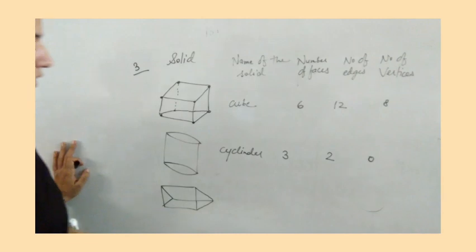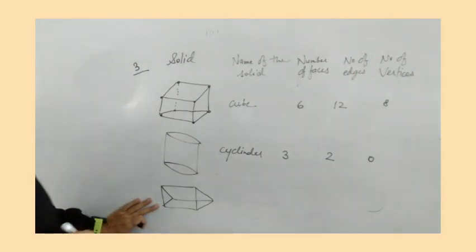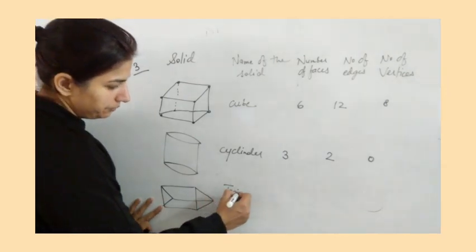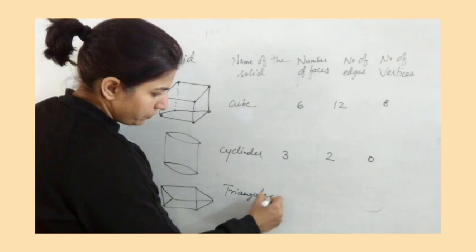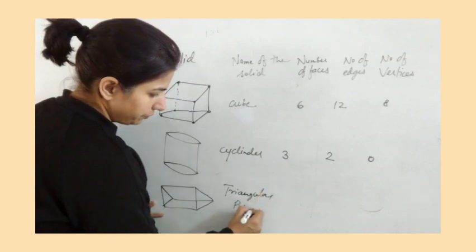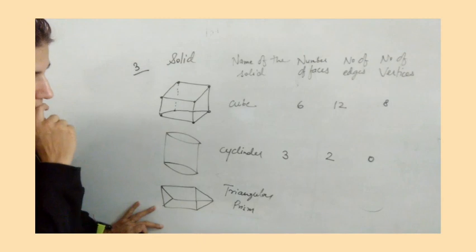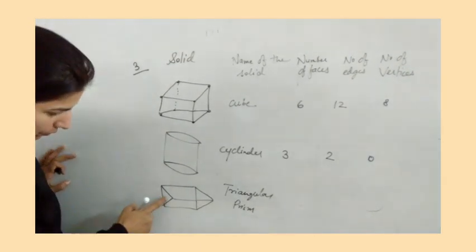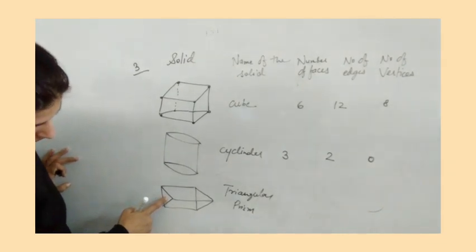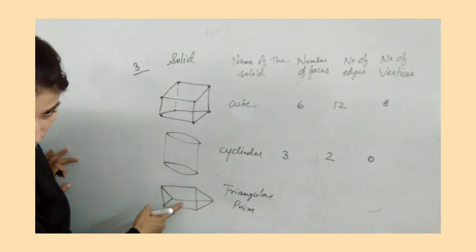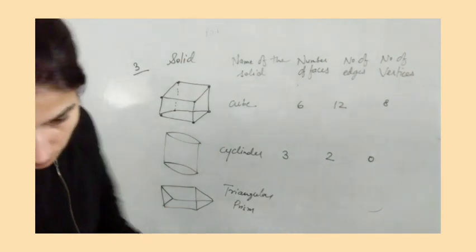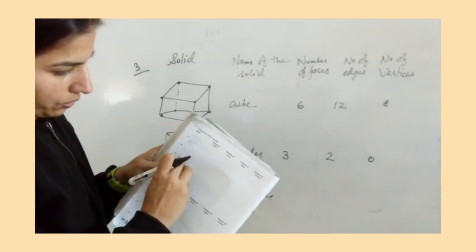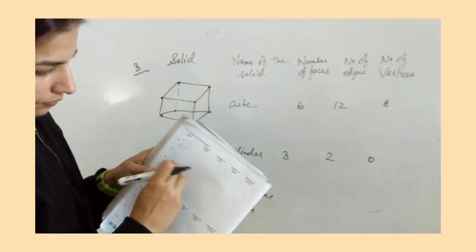In the triangular prism — this is the triangular prism — we have five faces: one, two, three, and two more, wait a moment, one, two, three, four, and one from behind.